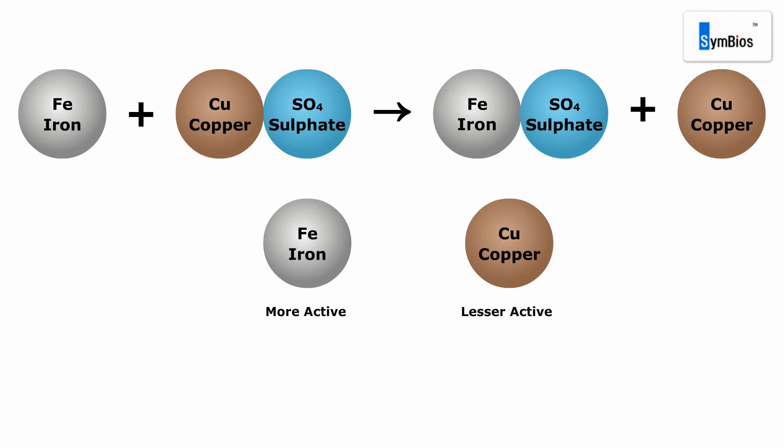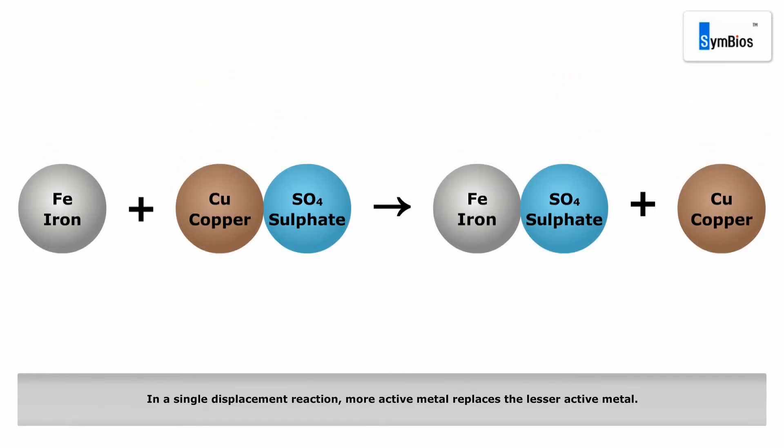It means iron has a higher tendency to donate electrons than copper. That is why iron could displace copper, a lesser active metal. In general, in a single displacement reaction, more active metal replaces the lesser active metal.